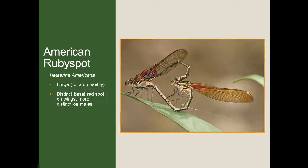Thankfully, the American rubyspot is a lot easier to identify. These are fairly large as far as damselflies go, and what you'll notice in both the male and female is that they have a fairly large red basal spot on the wings. It's more distinct on the males, but even on the females you can see that basal red patch on the wings. Without a doubt, if you see that on a damselfly, you know you're looking at an American rubyspot.